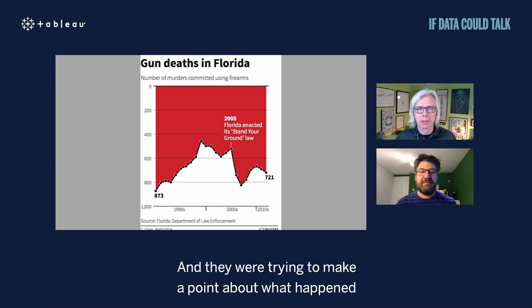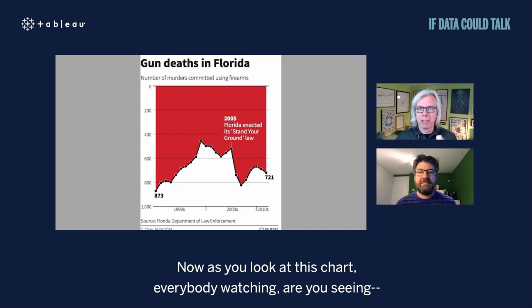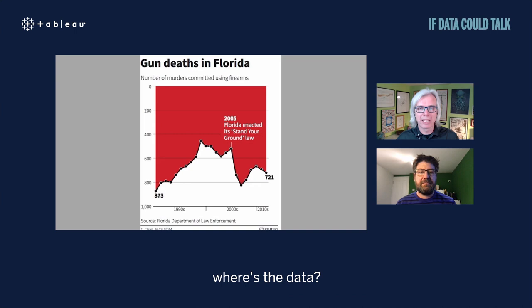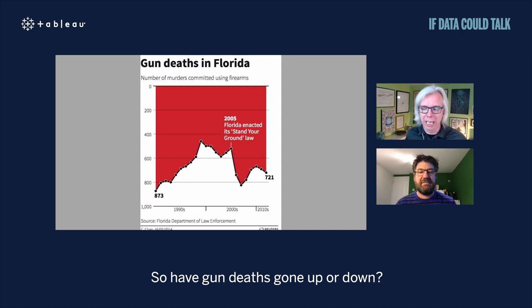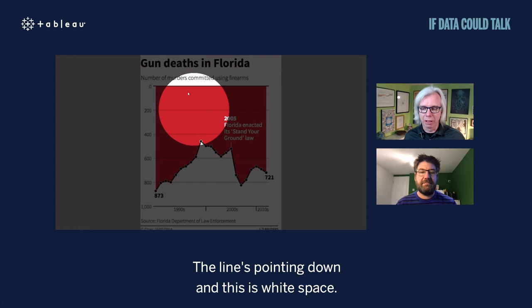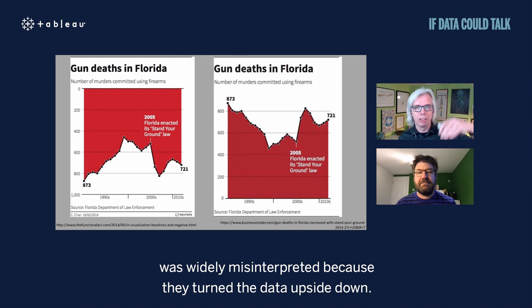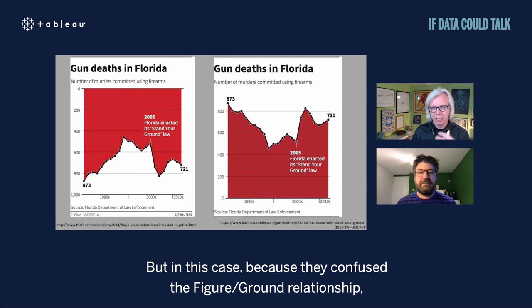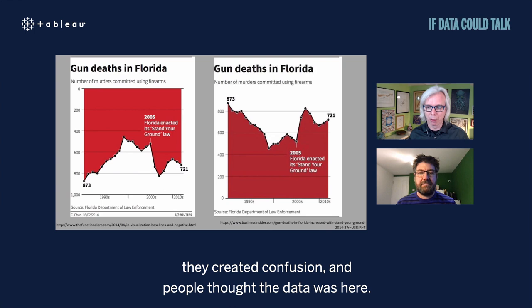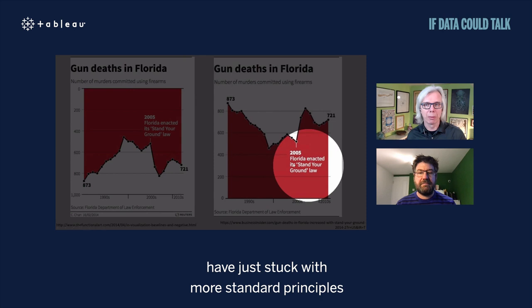Here's an example from data visualization: a chart created by Reuters in 2014 showing gun deaths in Florida, intended to make a point about what happened after laws changed. As you look at this chart, is the data the white area or the red? The bars are actually pointing down — this chart was widely misinterpreted because they turned the data upside down, confusing the figure-ground relationship. It might have been better to stick with more standard principles to avoid creating a duck-rabbit style visualization.